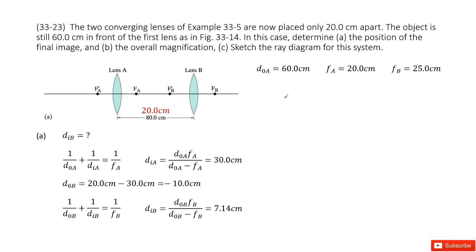Welcome to my channel. I am Zhang Jingxu. Let's look at problem 23 in chapter 33. Chapter 33 is about lenses and optical instruments. This is a two converging lens problem, and it's a follow-up for example 33-5.